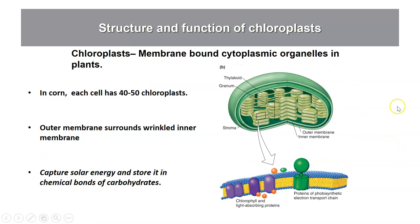Chloroplasts are an organelle with three membranes. The innermost membrane is highly folded and organized into disk-like stacks called the thylakoid membrane. That is the location where the main function of chloroplasts takes place: molecules called chlorophyll and associated proteins are embedded in this membrane and are involved in absorbing light energy. The chloroplast uses that light energy to make carbohydrates such as glucose.